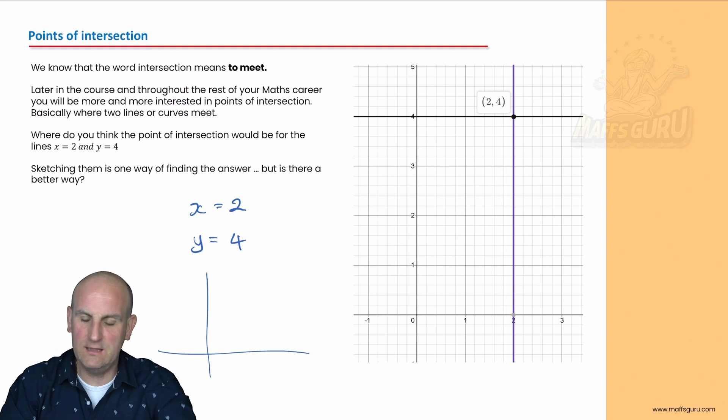It's that way, no it's not, tricked you, it's that way. So you draw the line x equals 2, that's going to go through 2 and every one of these points along that line is going to have an x value of 2. Then y equals 4, that's going to go through 4 and that meets there.